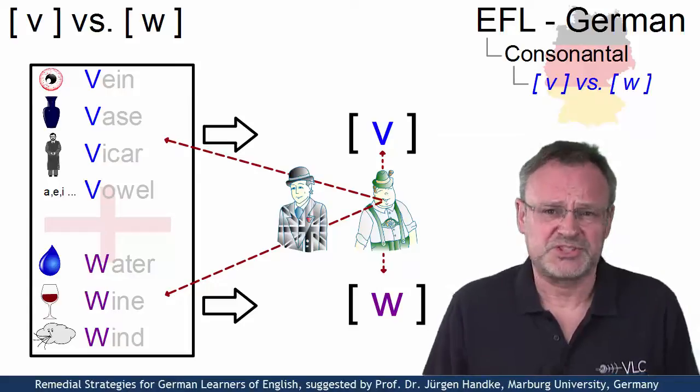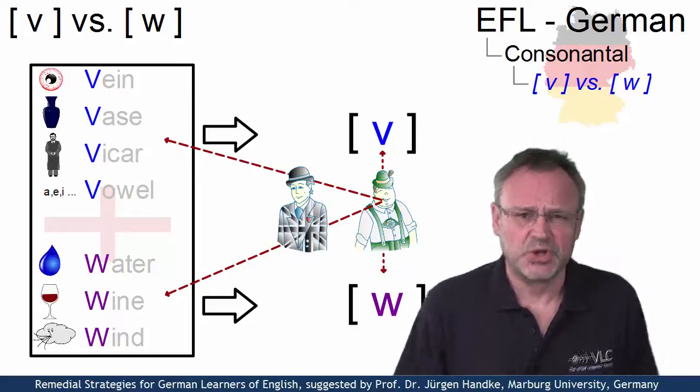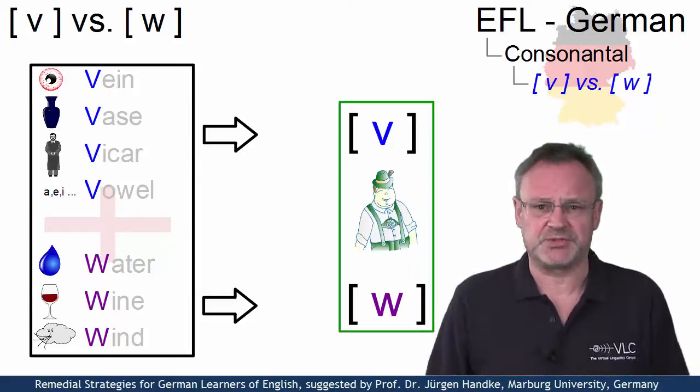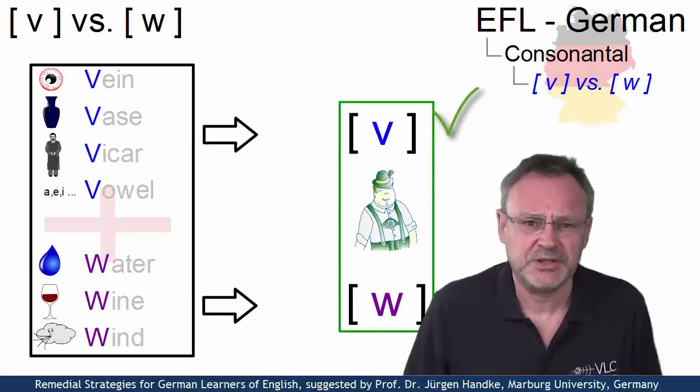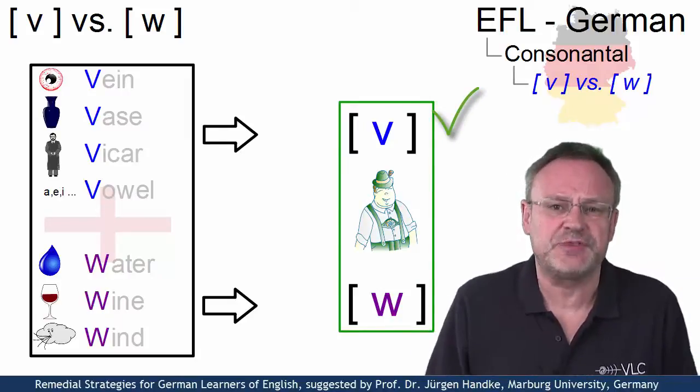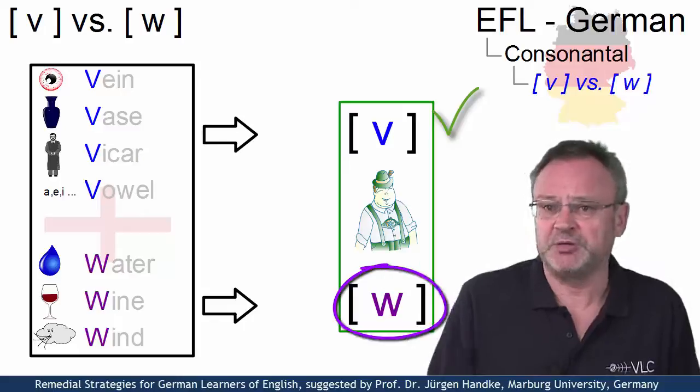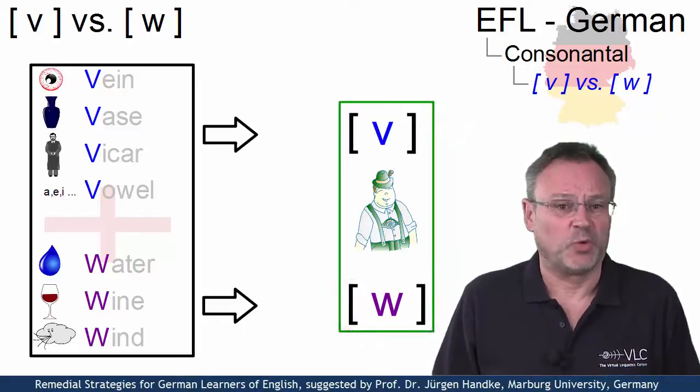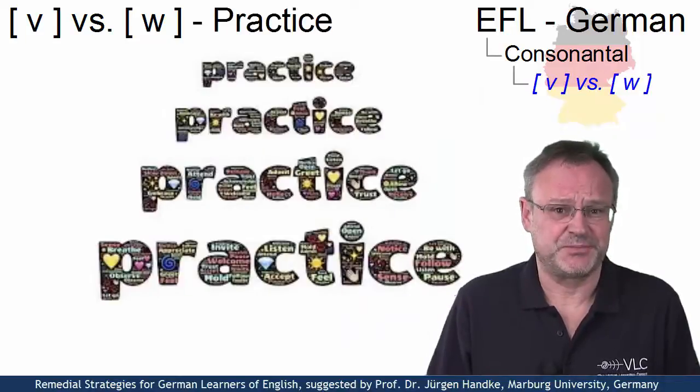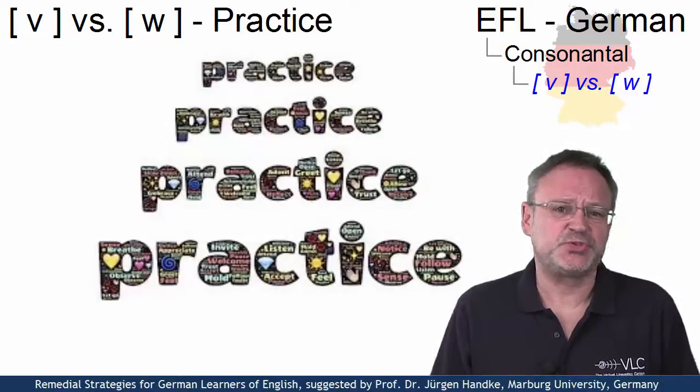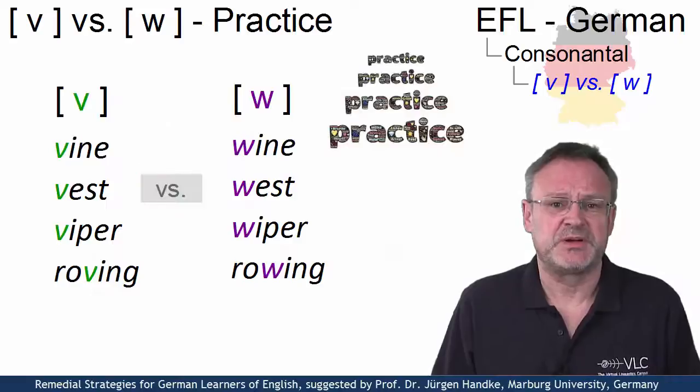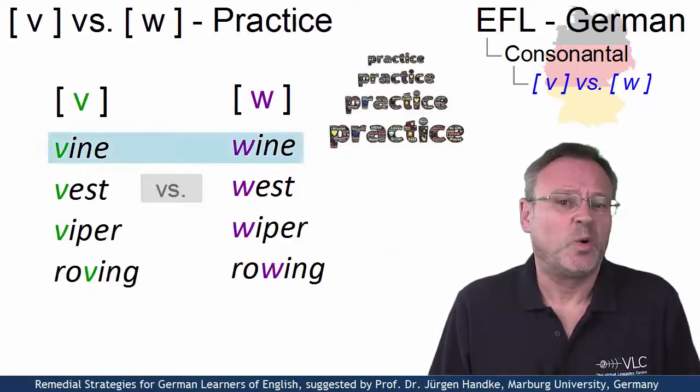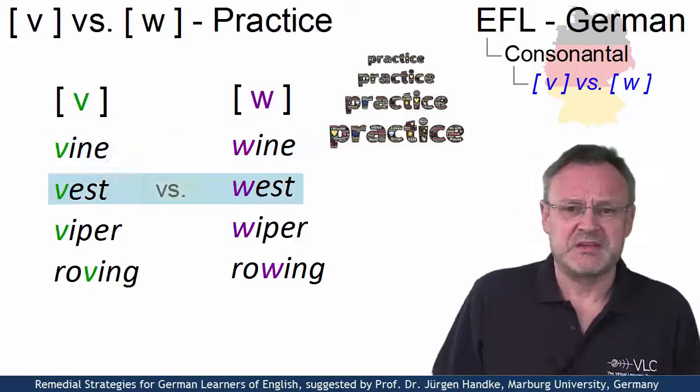Well, it's simple: practice. You can produce both sounds. The labiodental fricative is part of the German sound inventory, and the labiovelar approximant can easily be learned. So let's practice. Let's first produce some simple pairs: vine wine, vest west, viper wiper, roving rowing.